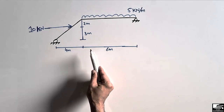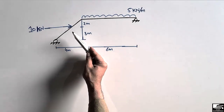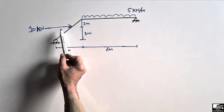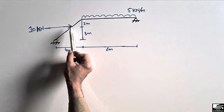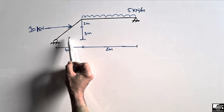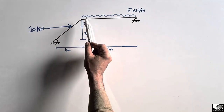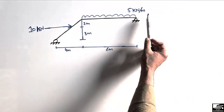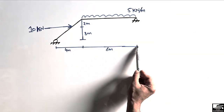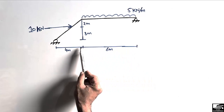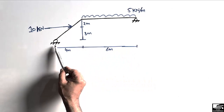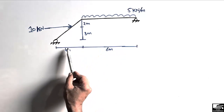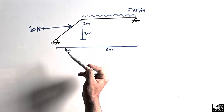This frame has one portion that is inclined. There is a lateral load of 10 kilonewton acting at a distance of 3 meters from the support, and there is a uniformly distributed load of 5 kilonewton per meter over a distance of 6 meters. The horizontal distance of the inclined portion of the frame is 4 meters.